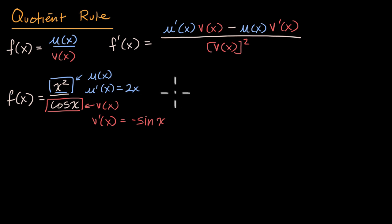So based on that, f'(x) is going to be equal to the derivative of the numerator function. That's 2x right over here. So it's going to be 2x times the denominator function, v(x), which is just cos(x). So 2x times cos(x).